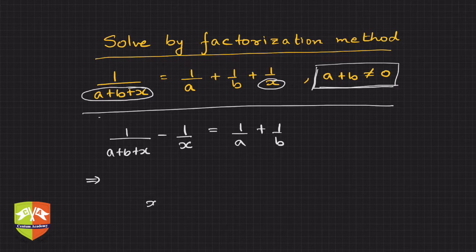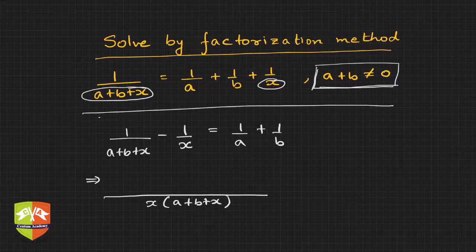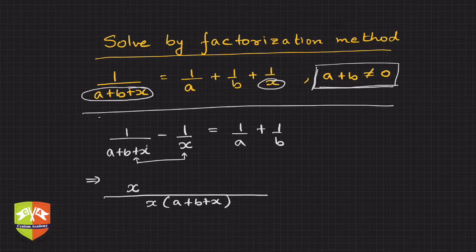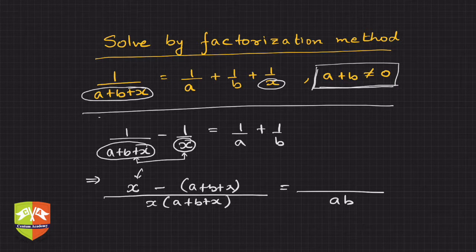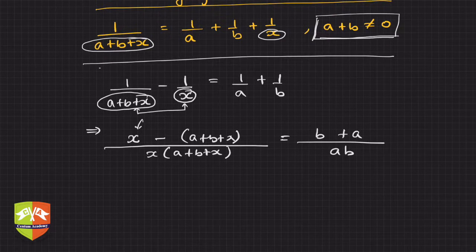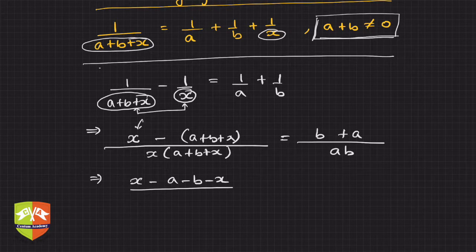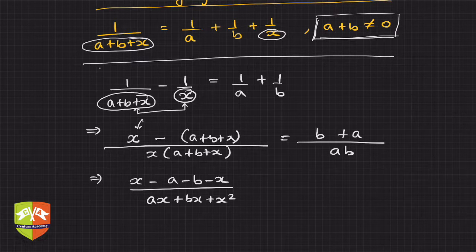Next, multiply the denominators to get the common denominator. On the LHS the common denominator is x(a + b + x). The numerator becomes x minus (a + b + x). Opening the denominator gives x² + ax + bx. On the right hand side, the common denominator is ab, giving (b + a) upon ab.